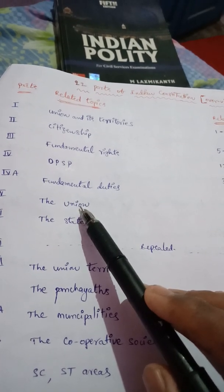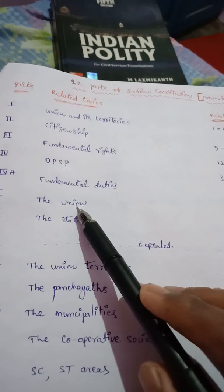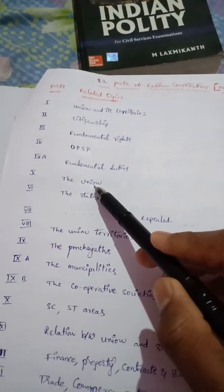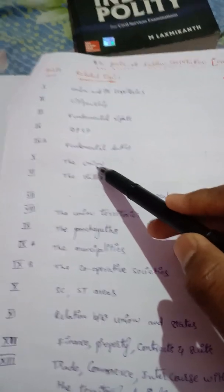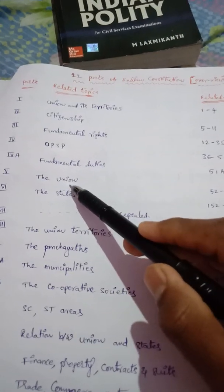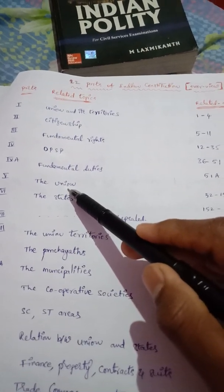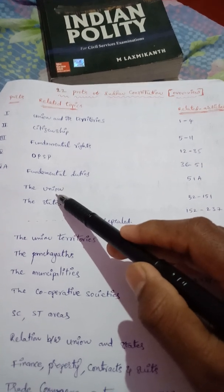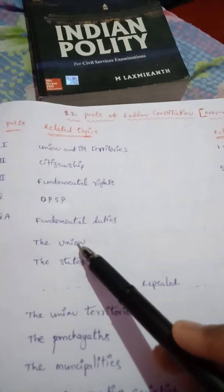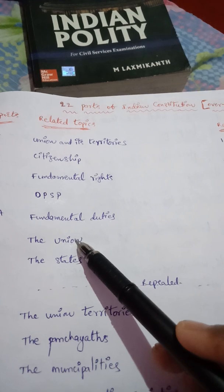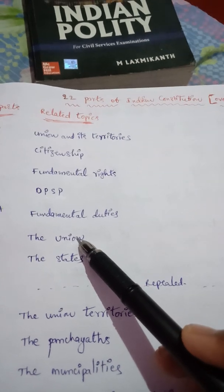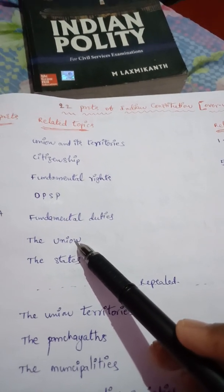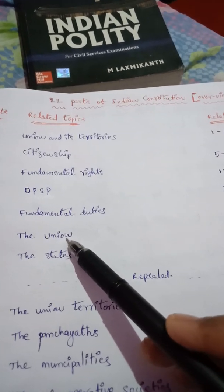Next, making Supreme Court orders — for example, the cancellation of all telecom licenses, and the decision to ban the sale of diesel cars with engine capacity of 2000 cc.